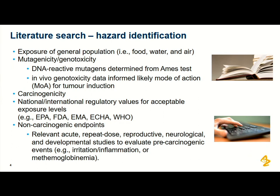Once you have your synthetic routes and have identified potential and known impurities, the first step is hazard identification — gathering what information we have on mutagenic carcinogens. Looking at exposure to the general population is important: do we have any information in food, water, or air? We'll also look at genotox results, which will be Ames positive, and at in vitro and in vivo genotox results to help inform the mode of action for tumour induction. Carcinogenicity obviously plays a major part.